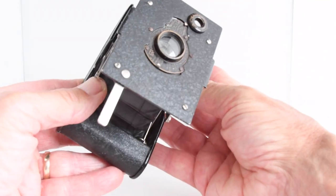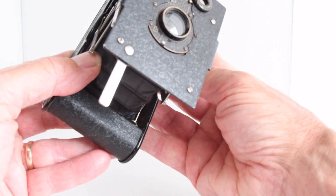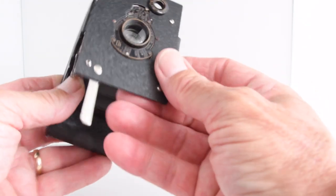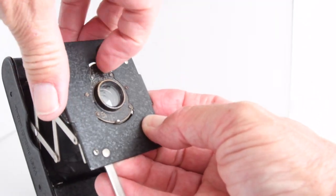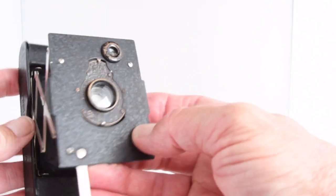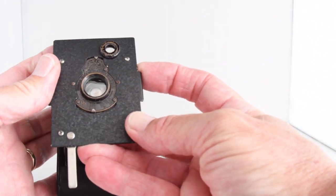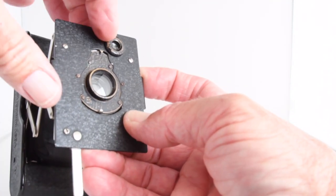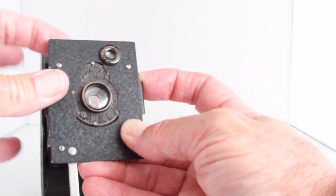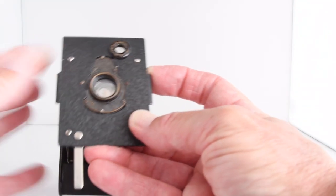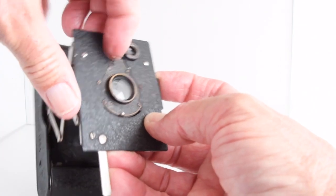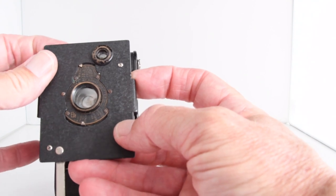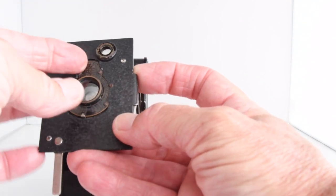We have a couple of shutter speeds. I'm just trying to read them. It looks like there's a 50th of a second, and then there is a T setting which presumably means the camera and shutter will stay open. There's B maybe, and then we have a 25th of a second. They all sound very similar actually, the 25th and the 50th.